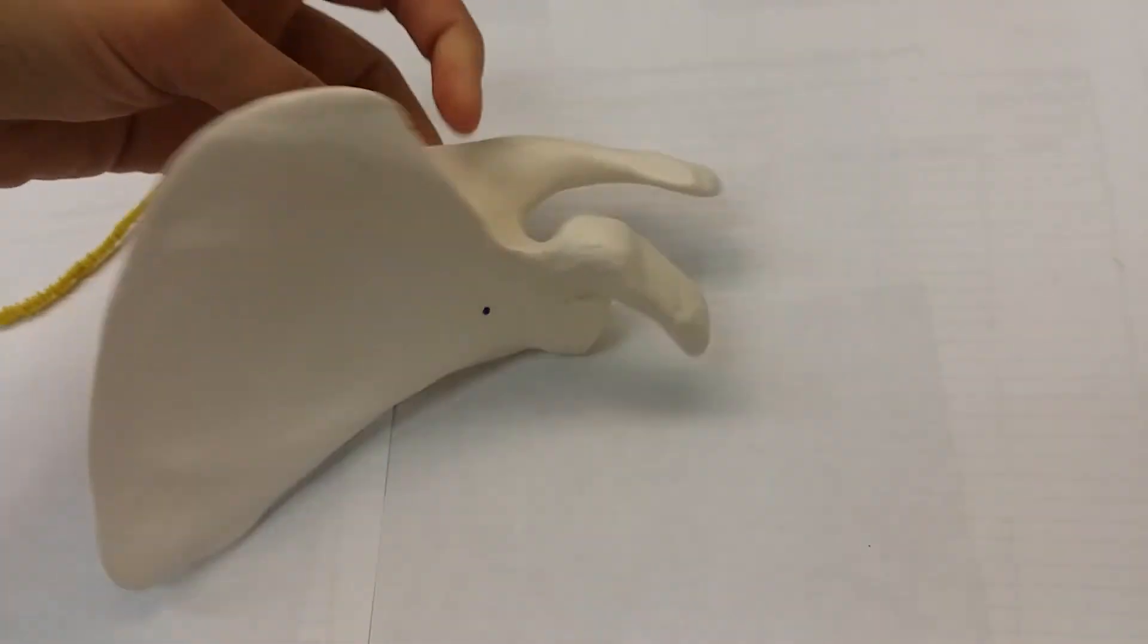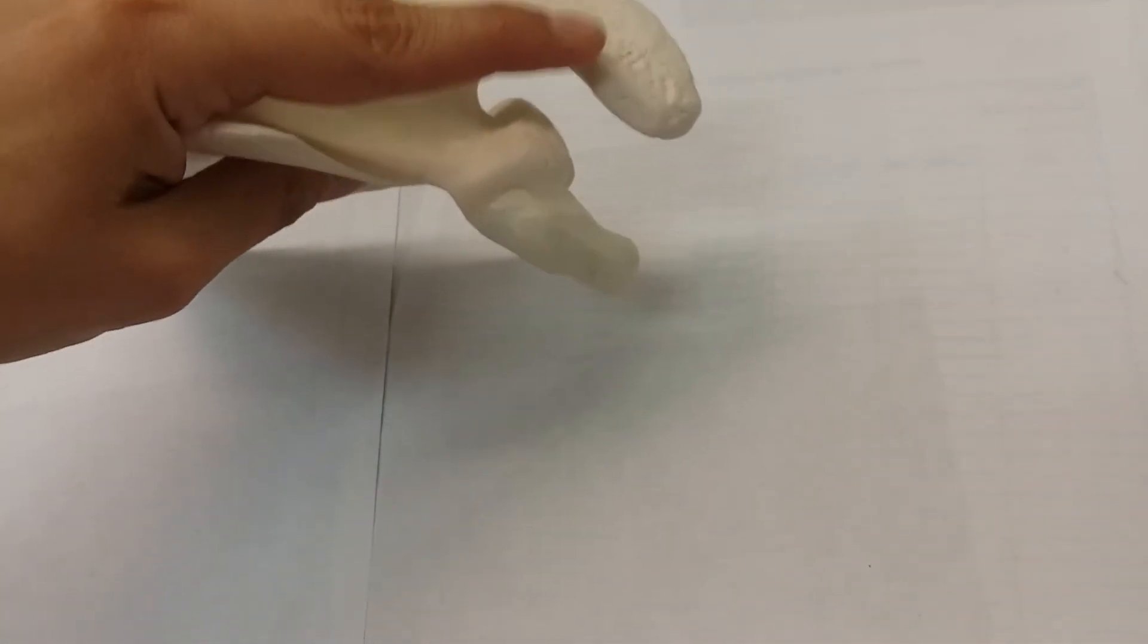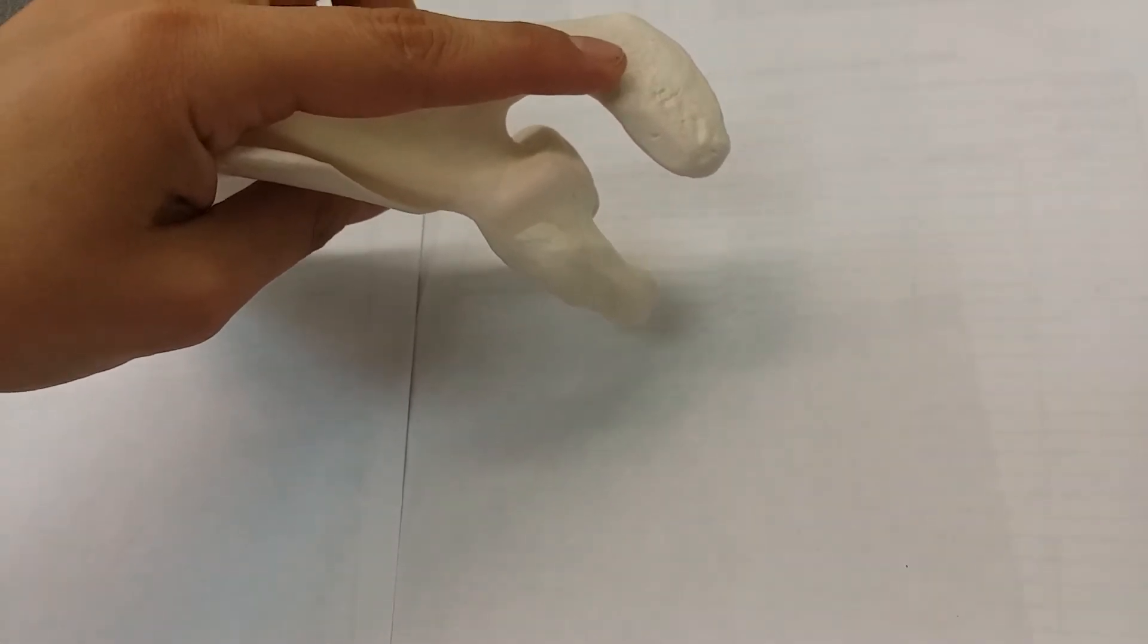So from the front, coracoid. Posterior, this is going to be your acromion process.